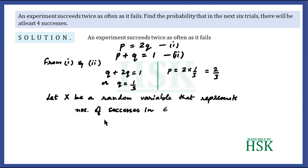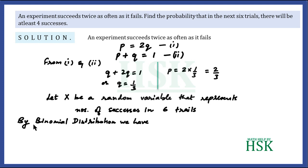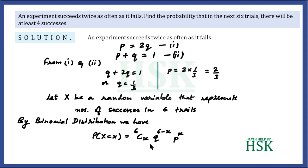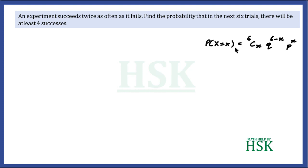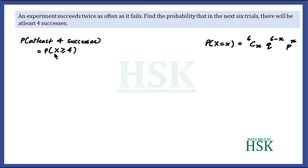By binomial distribution, the probability of exactly x successes is equal to 6Cx × q^(6−x) × p^x. We are going to use this result to calculate the probability of at least four successes, which means the probability of X greater than or equal to four.